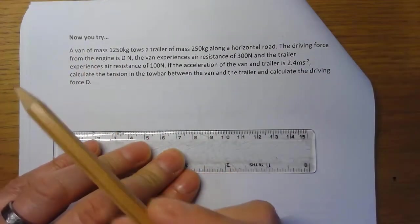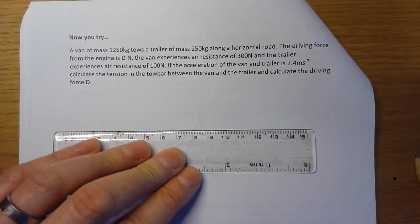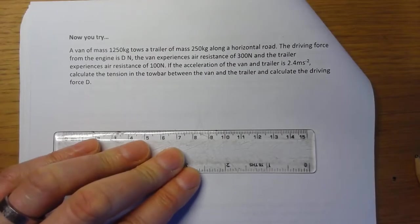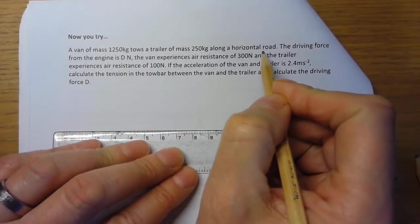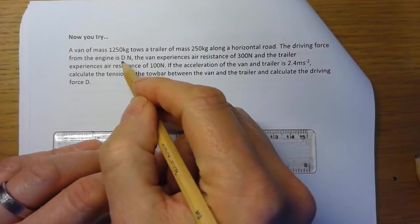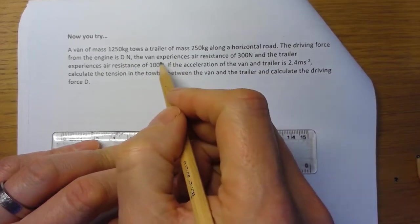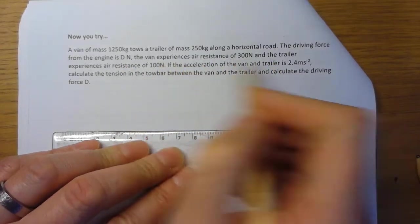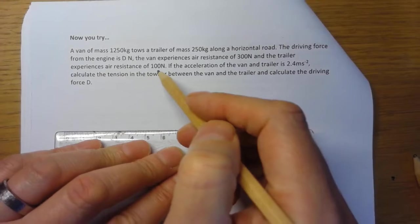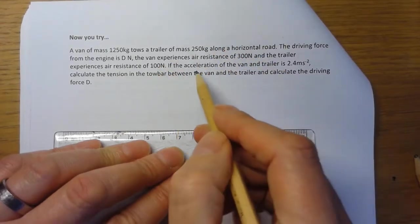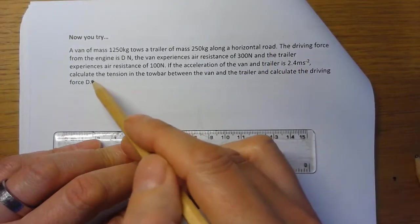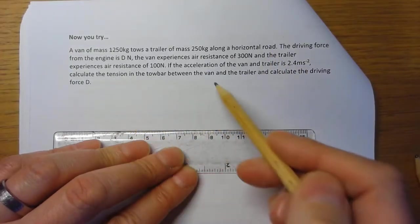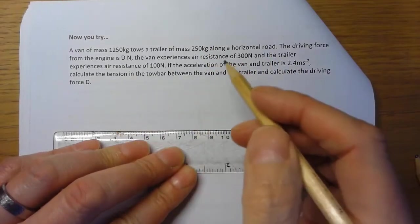Okay, so this is the now you try: A van of mass 1250 kilograms tows a trailer of mass 250 kilograms along a horizontal road. The driving force from the engine is D newtons. The van experiences air resistance of 300 newtons and the trailer experiences air resistance of 100 newtons. If the acceleration of the van and trailer is 2.4 meters per second squared, calculate the tension in the tow bar between the van and the trailer, and calculate the driving force D.